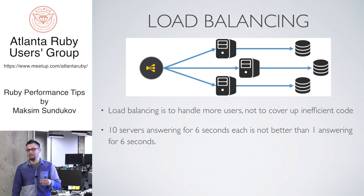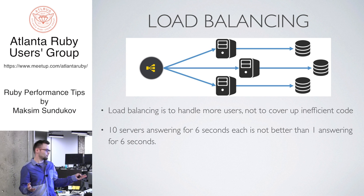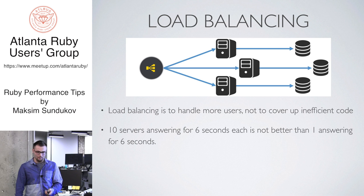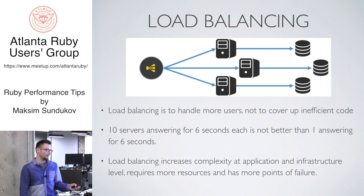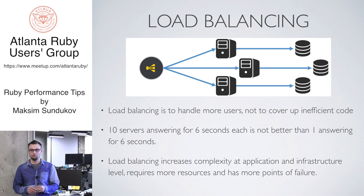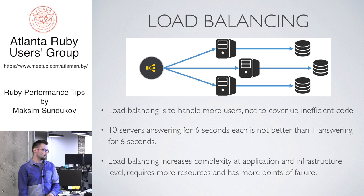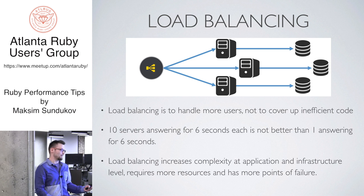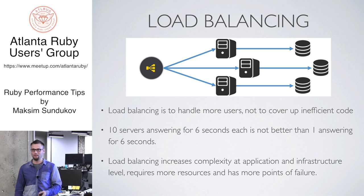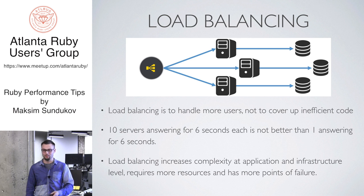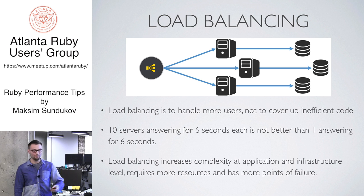If you have 10 servers that answer in six seconds, it doesn't matter — if one answers in six seconds, it's too long and it's a bad user experience. A big reason to avoid this is that load balancing increases complexity; you need DevOps, a department, a lot of other things. If you have many millions of users, it justifies the price. Otherwise, you're better off looking at your code and figuring out how to run everything with one server — and even if you do load balance, it's still a good thing to consider.